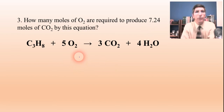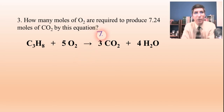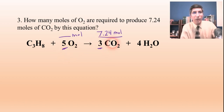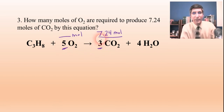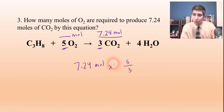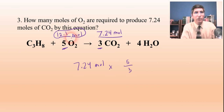Number three: how many moles of oxygen are required to produce 7.24 moles of carbon dioxide? We have the 7.24 moles of carbon dioxide, and this time we can see it's a three to five ratio. So however many moles of carbon dioxide we have, we're going to have five thirds times that moles of oxygen. We take 7.24 and multiply by five thirds, and we get an answer of about 12.1 moles of oxygen gas, O₂.